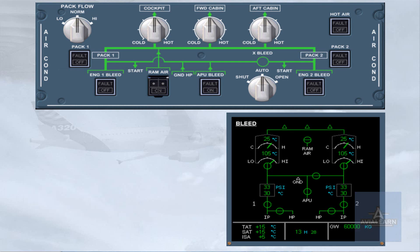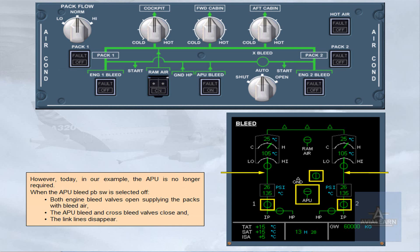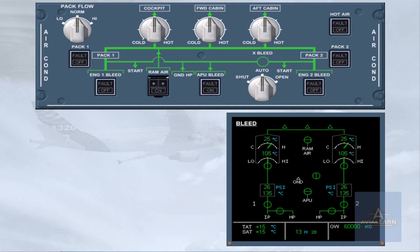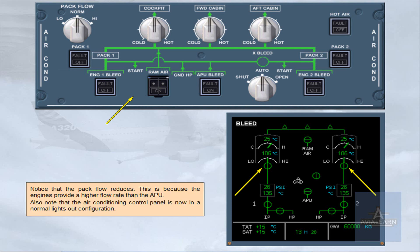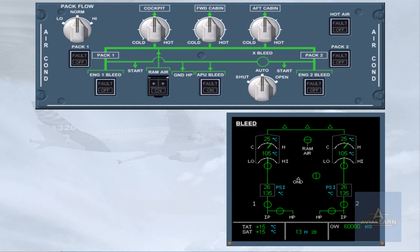However, in our example today, the APU is no longer required. When the APU bleed push-button switch is selected off, both engine bleed valves open, supplying the packs with bleed air. The APU bleed and cross bleed valves close, and the link lines disappear. Notice that the pack flow reduces, because the engines provide a higher flow rate than the APU. The air conditioning control panel is now in a normal lights-out configuration. When the APU is shut down, the APU symbol on the bleed page is removed.